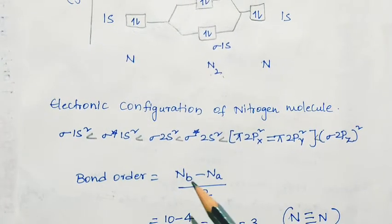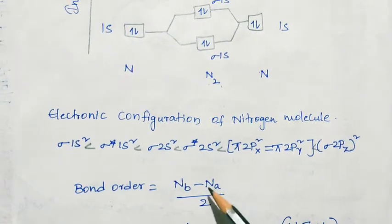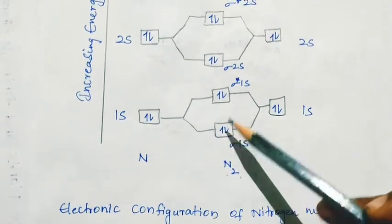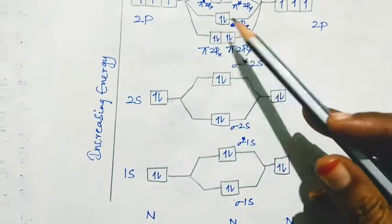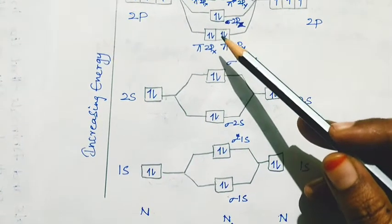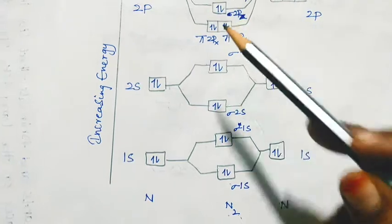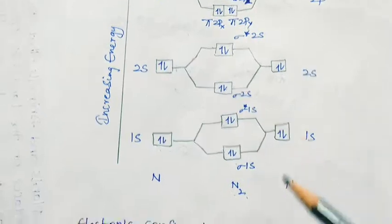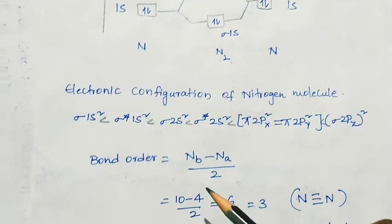Now we will calculate the bond order for nitrogen molecule. The number of electrons in bonding orbitals: 2 plus 2 is 4, plus 6 gives 10 electrons in the bonding orbitals. And 2 plus 2 gives 4 electrons in the antibonding orbitals.